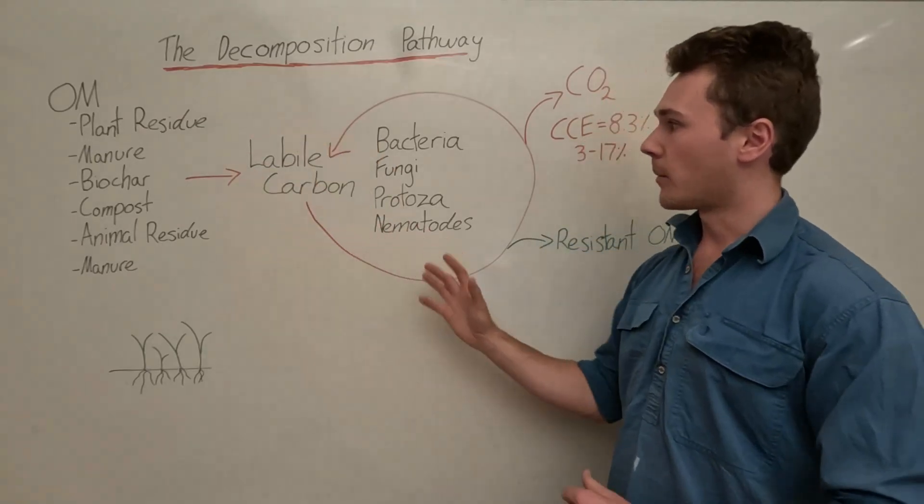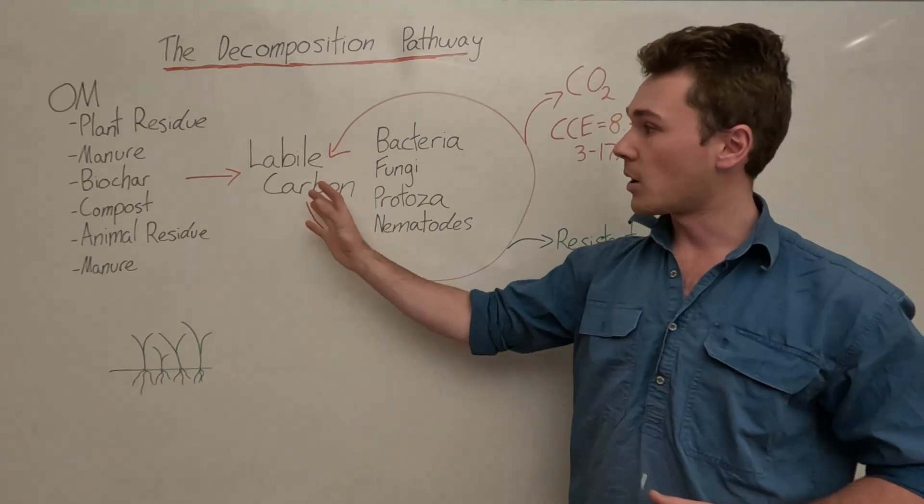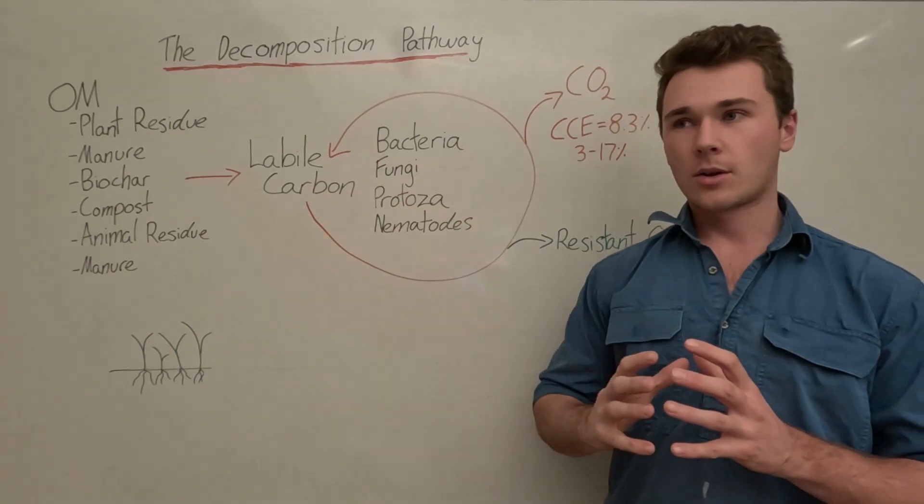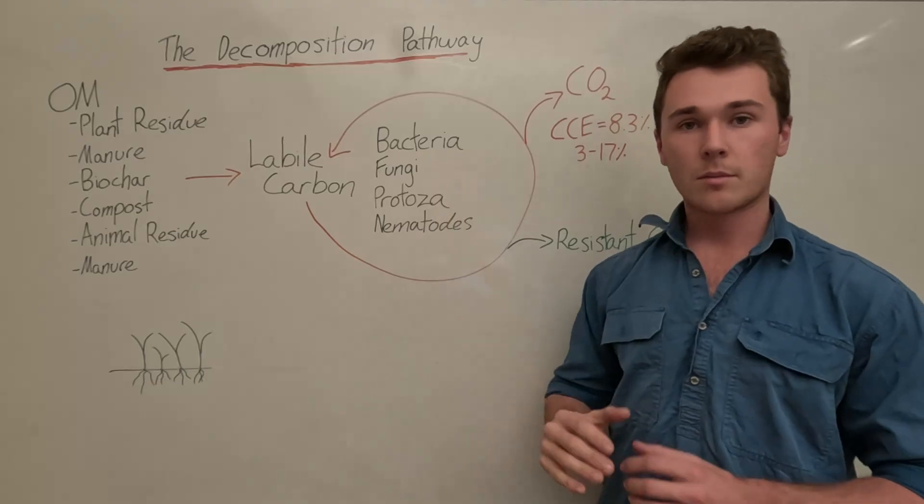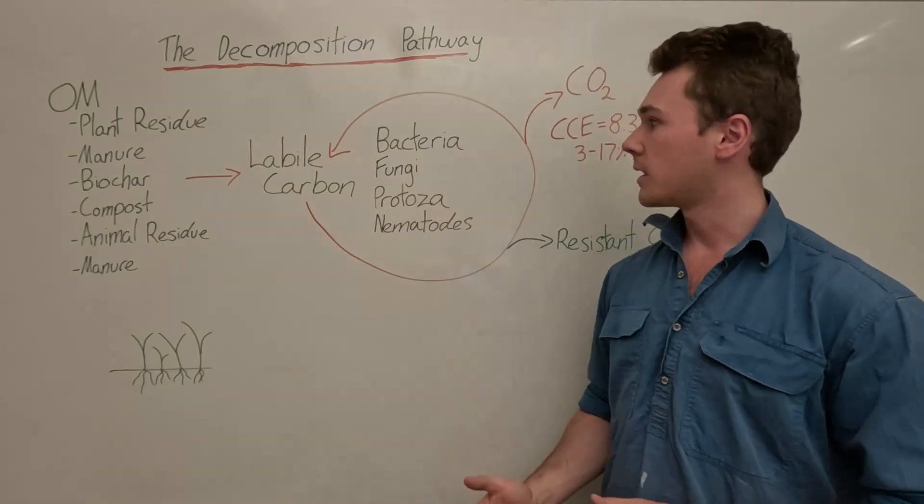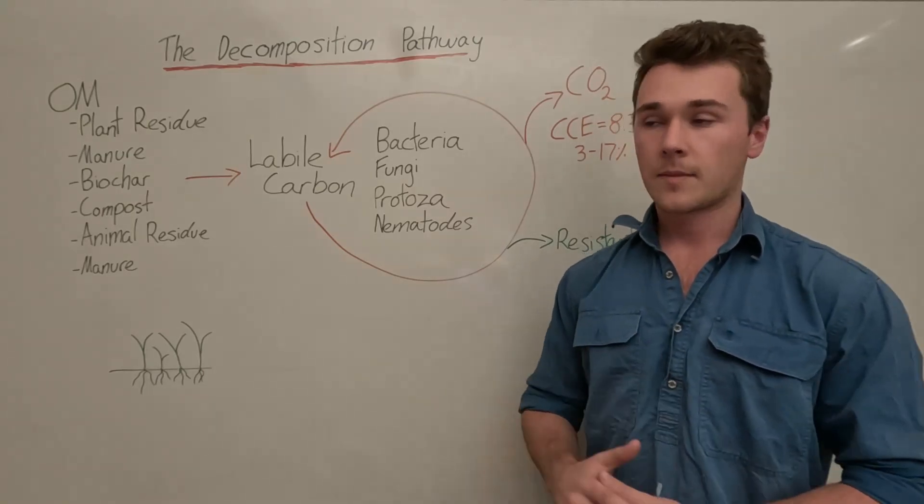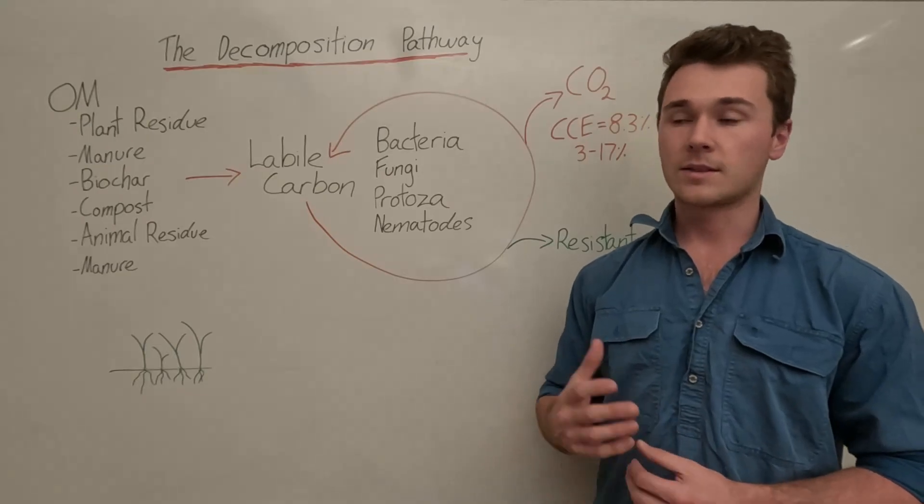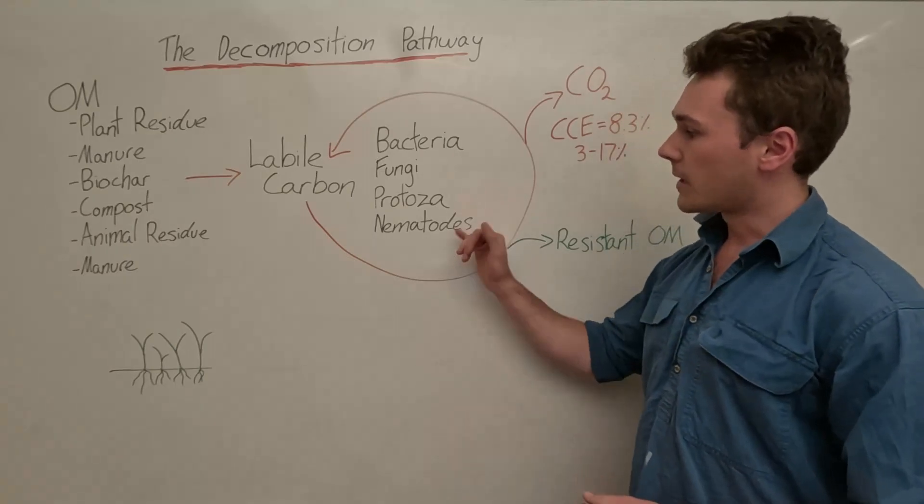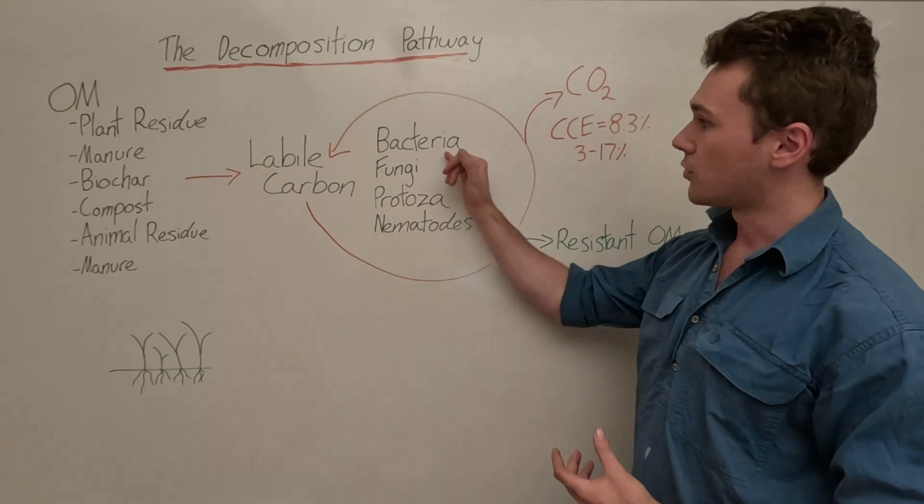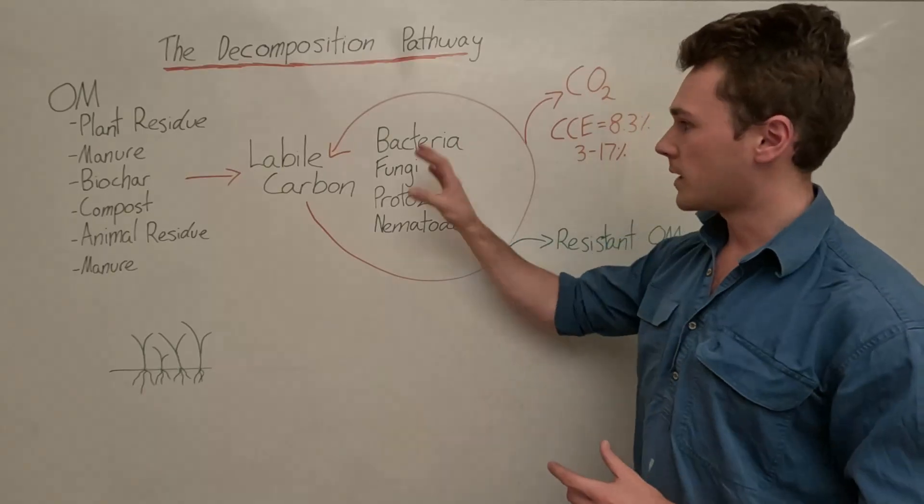That whole process is done by microbes - bacteria and fungi - they break down and decompose this labile carbon. In particular, bacteria consume easy to eat compounds, like simple sugars, things with a low carbon nitrogen ratio, meaning there's a high amount of nitrogen. Fungi tend to decompose hard to break down things with higher resistance to decomposition, things like cellulose, things with a really high carbon-nitrogen ratio. Protozoa and nematodes are more consumers. They consume bacteria and fungi as well as each other and keep this cycle moving.